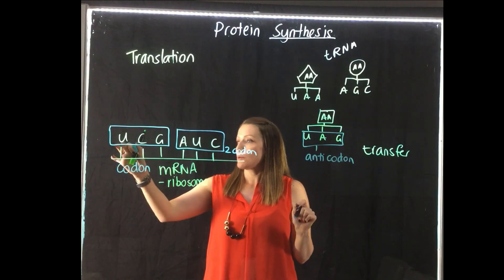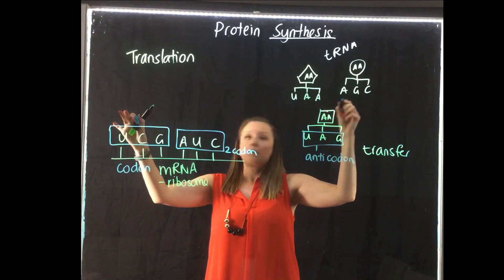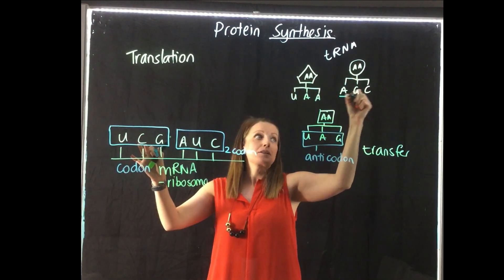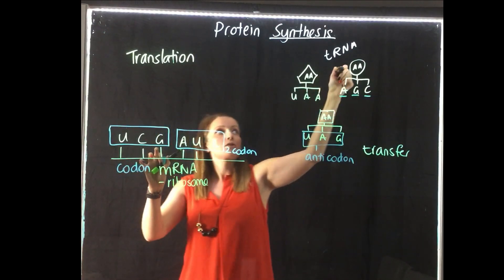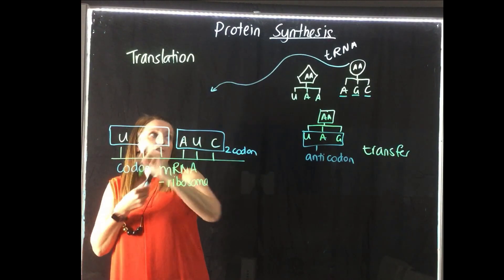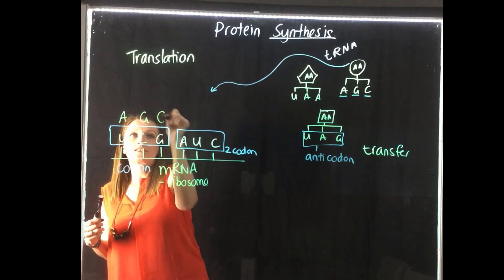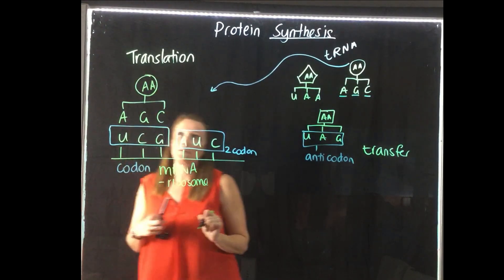So as we can see, we've got UCG here. So U we know matches with A, C matches with G, and G matches with C. So what would actually happen is this transfer RNA would come all the way over here, would match up A, G, C, and we would have this amino acid being brought in.